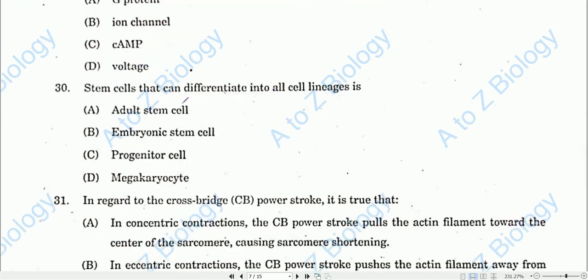Question number thirty: Stem cells that can differentiate into all cell lineages are embryonic stem cells. From embryonic stem cells, differentiation into any and all kinds of cell lineages is possible.